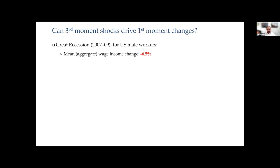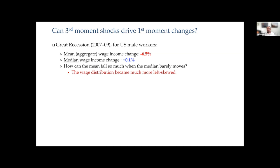But the mean is not the median — it's not what happens to the average person in the economy. So what was the median income change during this time? Actually, it was positive. How can the median person not have an income fall during the Great Recession, while we think there was a very big aggregate decline in wages?